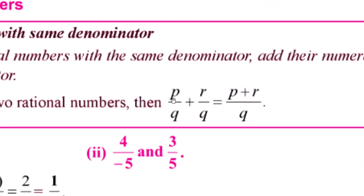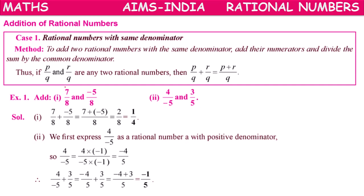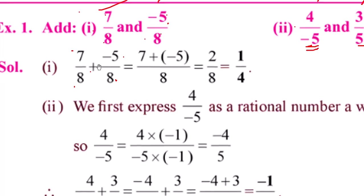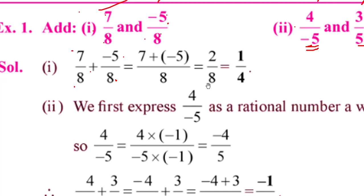For example: 7/8 + (-5/8) = (7 + (-5))/8 = (7 - 5)/8 = 2/8 = 1/4. For the second example, 4/(-5) + 3/5: first, 4/(-5) is not in standard form, since the denominator must be positive. Multiplying numerator and denominator by -1 gives -4/5. Now -4/5 + 3/5 = (-4 + 3)/5 = -1/5.